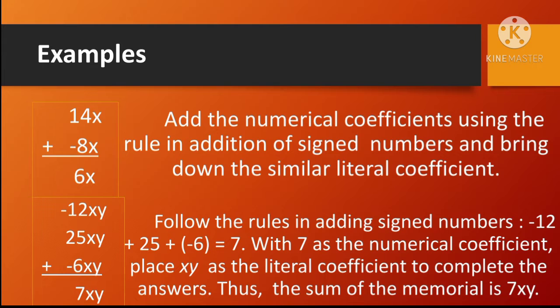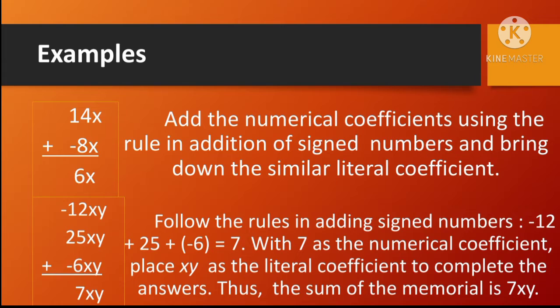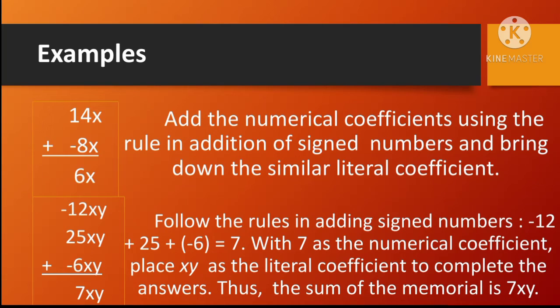Next, negative 12xy plus 25xy plus negative 6xy is equal to 7xy. Follow the rules in adding signed numbers: negative 12 plus 25 plus negative 6 is equal to 7. With 7 as the numerical coefficient, place xy as the literal coefficient to complete the answer. Thus, the sum of the monomial is 7xy.